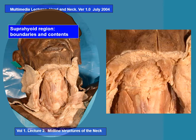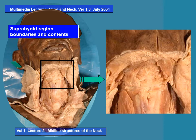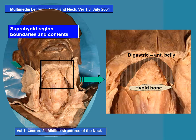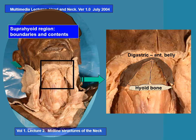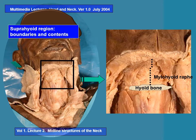Let's examine the boundaries and contents of the supra-hyoid region. The hyoid bone is one boundary — it is a triangle. The other two boundaries are the anterior bellies of the digastric, and that triangle is the submental triangle. The floor of this triangle is the mylohyoid muscle with the mylohyoid raphe in the middle. The only content of this triangle is a few lymph nodes; otherwise, there is nothing in particular.